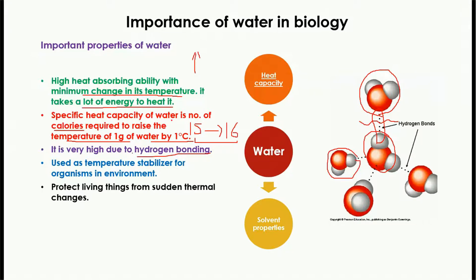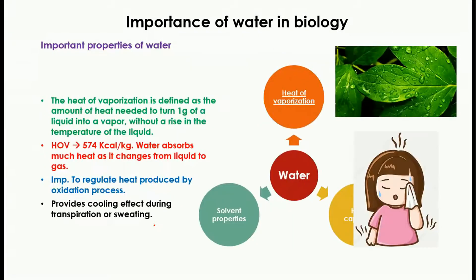This property of water is used by organisms as a temperature stabilizer. It also protects living things from sudden thermal changes and in turn stabilizes the structure of cells. For example, a cell contains many enzymes — if there is a sudden temperature change, the high heat capacity of water protects those enzymes from denaturation, allowing living organisms to perform their normal functions.